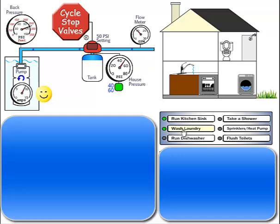When additional taps are turned on, like to wash laundry or run the dishwasher, the CSV increases the flow from the pump to 10 gallons per minute, then 12 gallons per minute. Taking a shower at the same time increases the flow to 16 gallons per minute. Having a sprinkler or heat pump zone come on at this time would cause the CSV to increase the flow to 22 gallons per minute. If a toilet is flushed while all of this is going on, the CSV will increase the flow to 24 gallons per minute as needed.